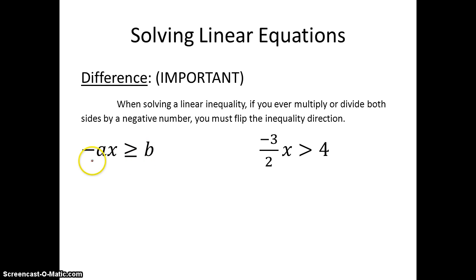So the main difference is when solving linear inequalities, if you ever multiply or divide both sides by a negative number, you must flip the inequality direction. For example, negative ax is greater than or equal to b. If I divide both sides by negative a, I have to flip that. So I get x is less than or equal to negative b over a. And same thing, you can see it numerically. If to get rid of my fraction, I can multiply by the reciprocal. So negative 2 over 3. Everything cancels, giving me x. I flip my sign times negative 2 over 3, which gives me a negative 8 over 3. And that would be my solution.